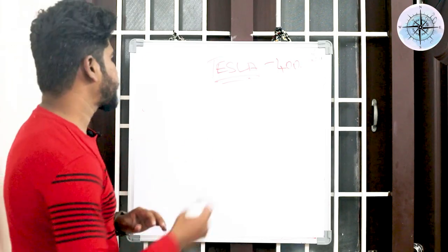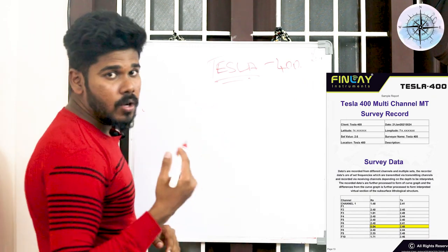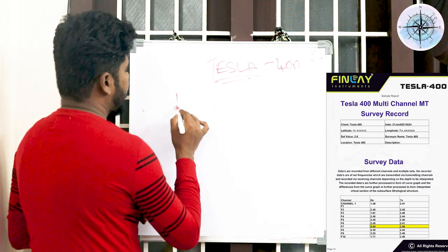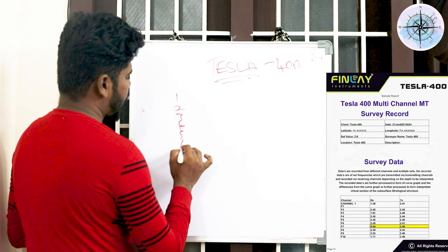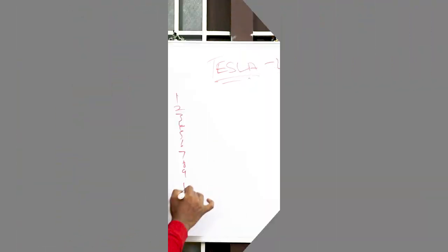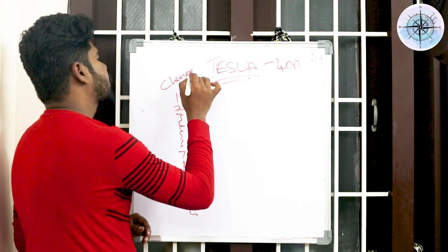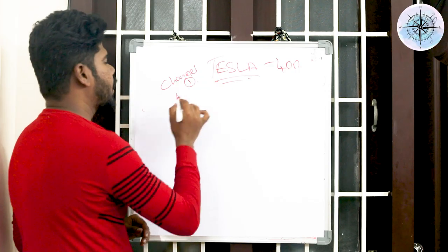So how many data are we going to collect from Tesla 400? One, two, three, four, five, six, seven, eight, nine, ten, eleven, twelve. So this is for channel one. In channel one we were getting twelve data.